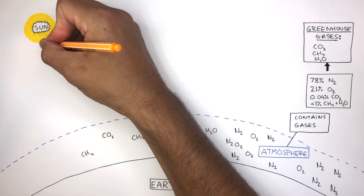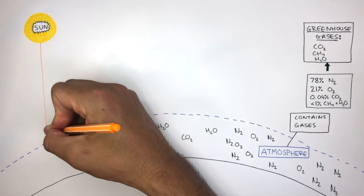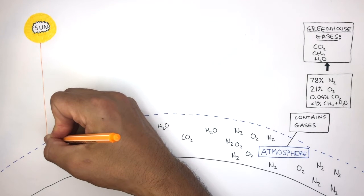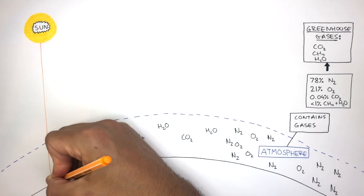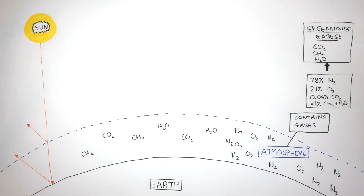The Sun transfers electromagnetic radiation towards the Earth. The shortwave electromagnetic radiation is able to pass through Earth's atmosphere and it reaches the Earth's surface where it is absorbed. This causes the surface of the Earth to warm up. Some of the shortwave electromagnetic radiation is reflected by Earth's atmosphere and some by Earth's surface back into space.